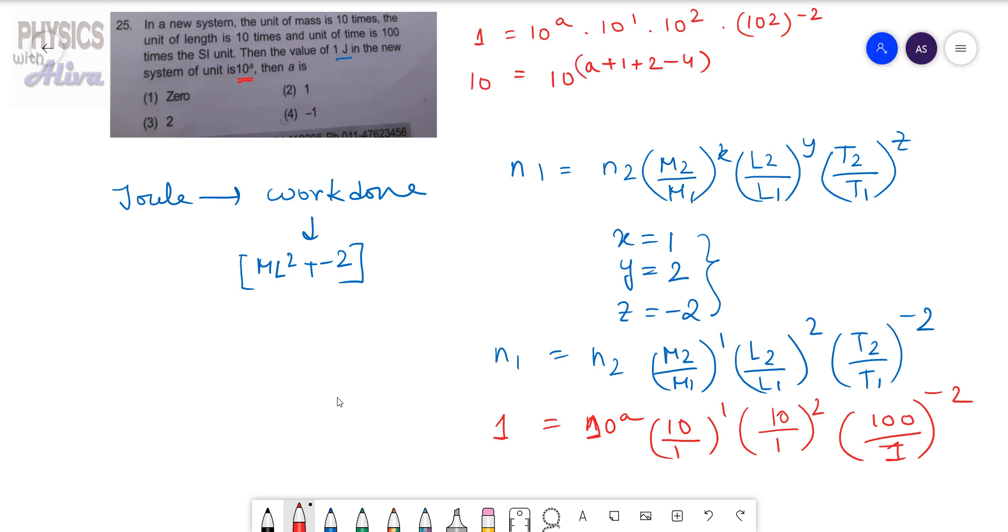1 means 10 to the power 0, so a plus 3 minus 4 equals 0, that means a minus 1 equals 0, that means a equals 1.